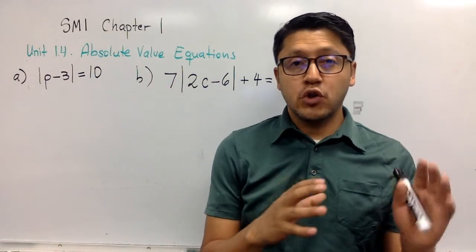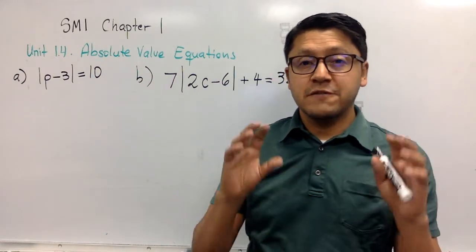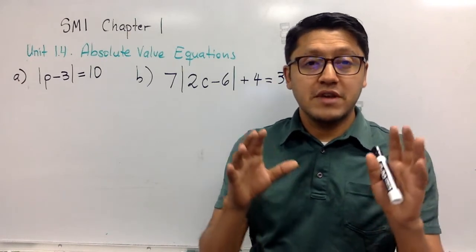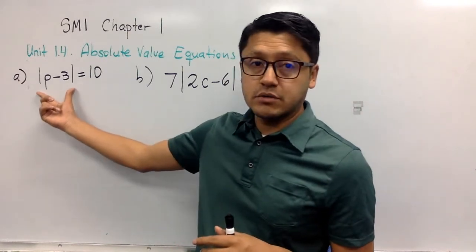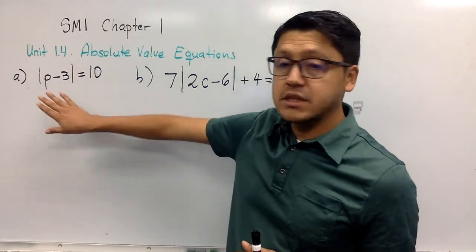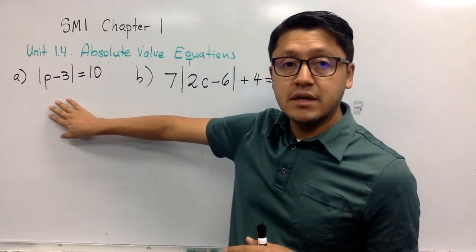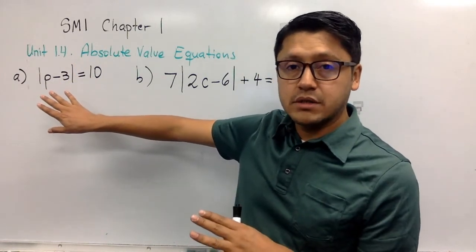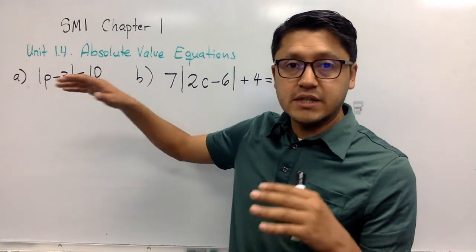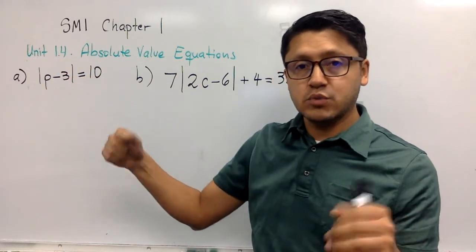At this point in example a, the absolute value bar or absolute value is completely isolated. That's what we're looking for, because that's when we can come up with this analysis.